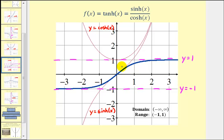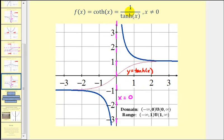The last graph is the graph of the hyperbolic cotangent function. If we compare the blue graph to the red graph, the red function values and the blue function values are reciprocals of one another. Notice how this graph has a vertical asymptote at x equals zero as well as two horizontal asymptotes at y equals one and y equals negative one.